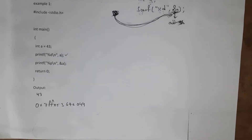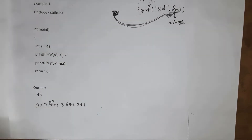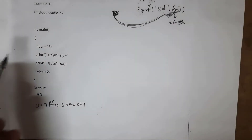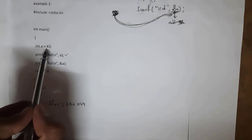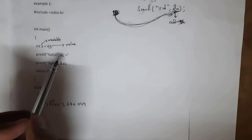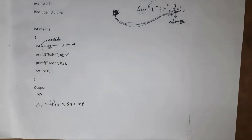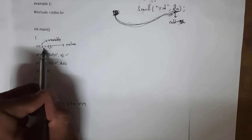I will give one example so you can clearly understand how pointers work. As we know, we need to start a C program with a header file. I wrote #include stdio.h, then int main, and inside the main function I wrote int a = 43, meaning I am assigning value 43 to variable a. I wrote printf with %d and a — whatever value is present inside variable a will be generated as output, so I will get 43. But now I want to find the address of this variable, not the value.